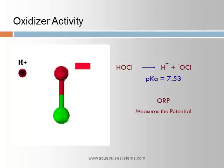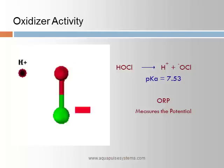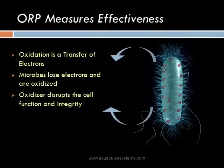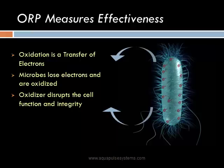Chlorine, bromine, chlorine dioxide, peroxides, peroxyacetic acid, and ozone are all oxidizers and behave by the same principles. In this example, chlorine in solution becomes HOCl, or hypochlorous acid, and at a pH of 7.5, it is at an equilibrium balance between its active HOCl and its inactive hypochlorite ion, or OCl⁻. Microbes are surrounded by a cell membrane made up of structural proteins, which maintain their shape due to an electron balance. In the presence of a strong oxidizer, electrons are transferred from the cell to the oxidizer. The cell membrane loses its integrity and disintegrates. So the faster the transfer of electrons, or the higher the oxidation potential, the faster you kill the pathogen.